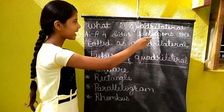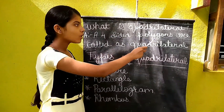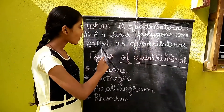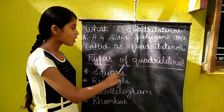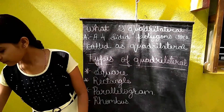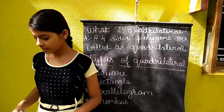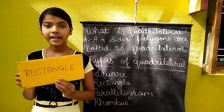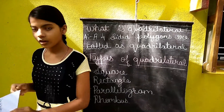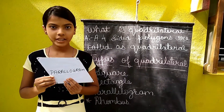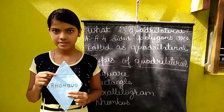What is quadrilateral? A four-sided polygon is called a quadrilateral. Types of quadrilateral are square, rectangle, parallelogram and rhombus.